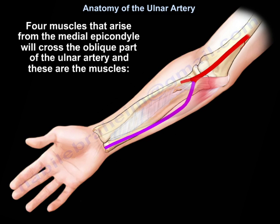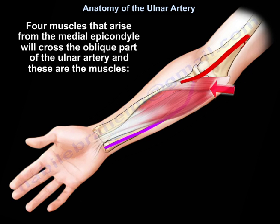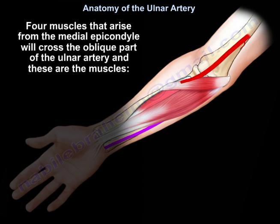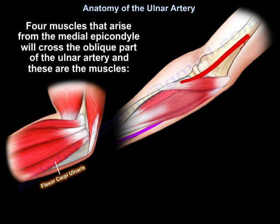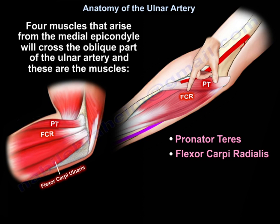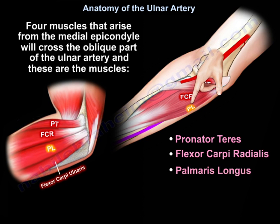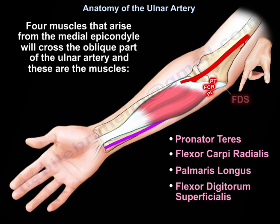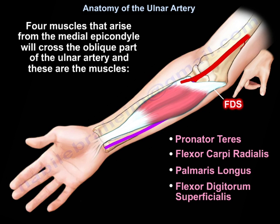Four muscles that arise from the medial epicondyle will cross the oblique part of the ulnar artery, and these are the following muscles: the pronator teres, the flexor carpi ulnaris, the palmaris longus, and the flexor digitorum superficialis.